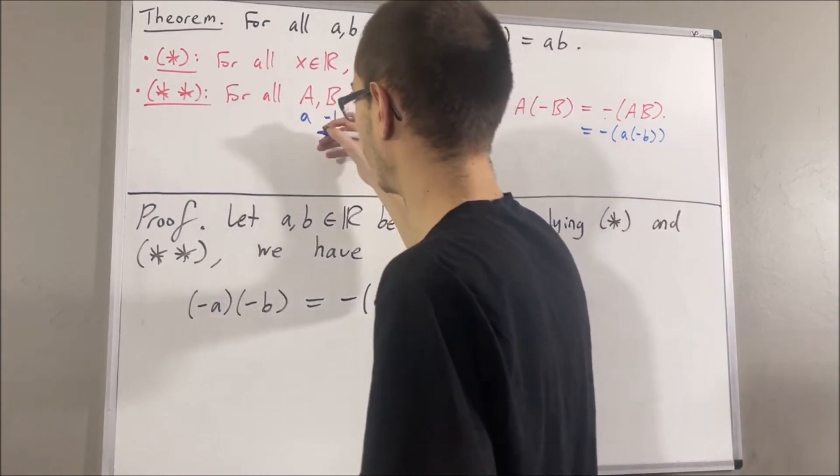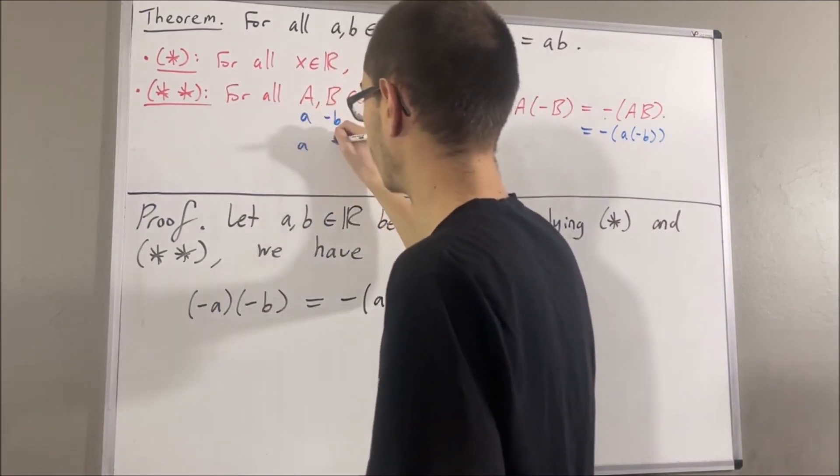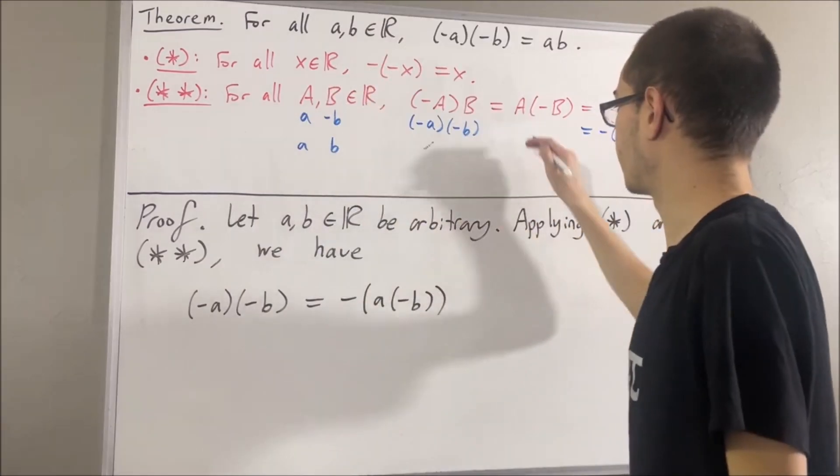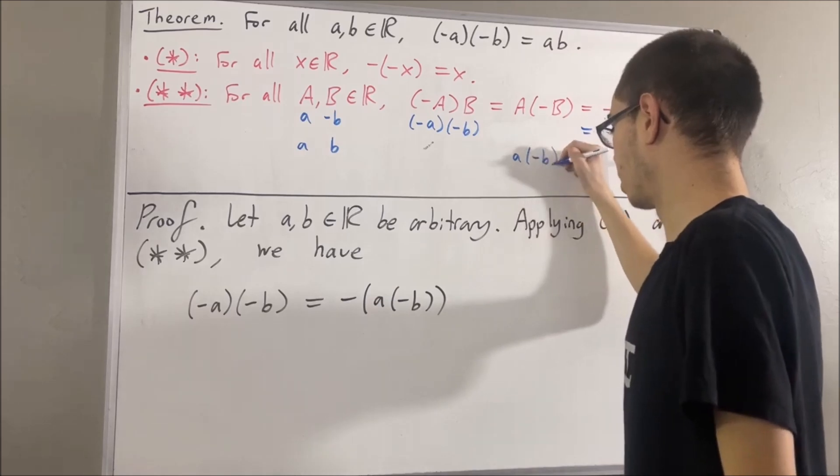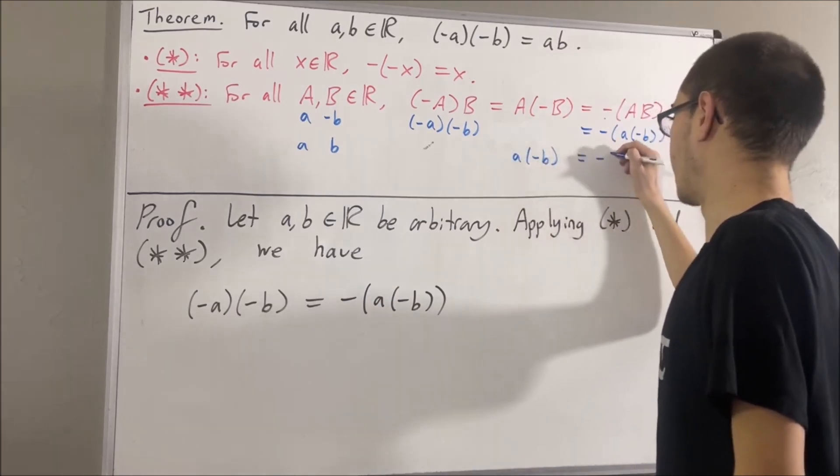Well, in that case, we have A times negative B is equal to the negative of AB.